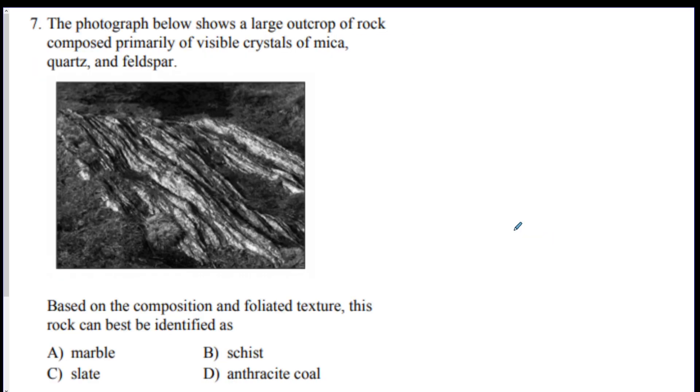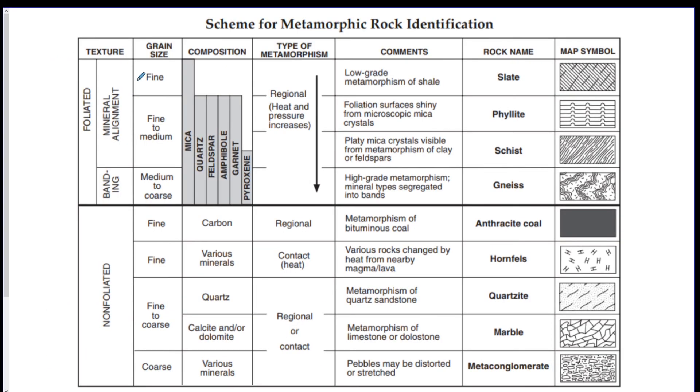Number seven. Based on the composition and foliated texture, that's a buzzword for metamorphic rock. What is this rock? Well, it says it's composed primarily of mica, quartz, and feldspar. You have to go to our metamorphic rock chart, and I knew to go here because it said foliated. So mica, it only is mica. Mica, quartz, and feldspar. So it looks like our answers can either be phyllite or schist, maybe. It's definitely not slate, though, and it's definitely not gneiss. Slate's out because that doesn't have all those. Marble, if you look at marble, that is calcite and dolomite. So that's out.